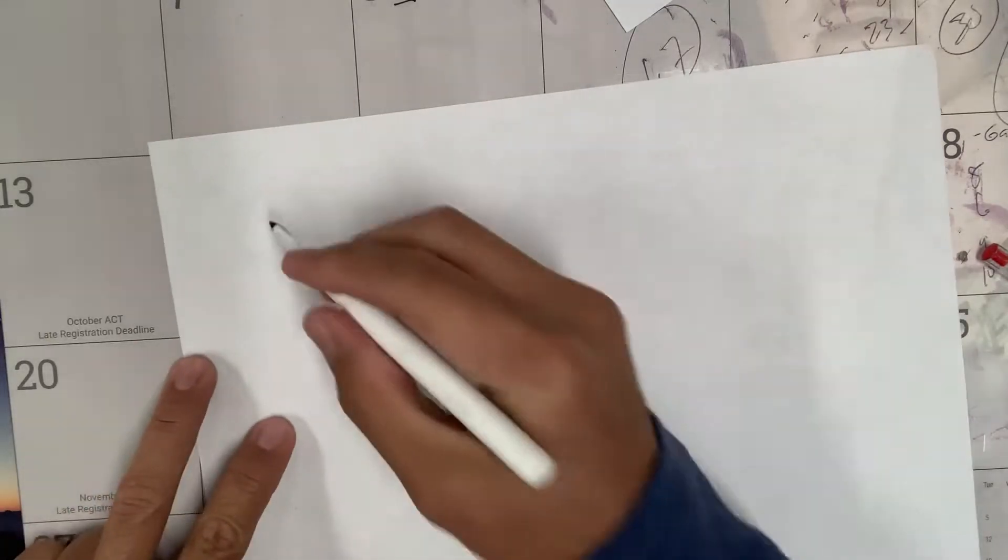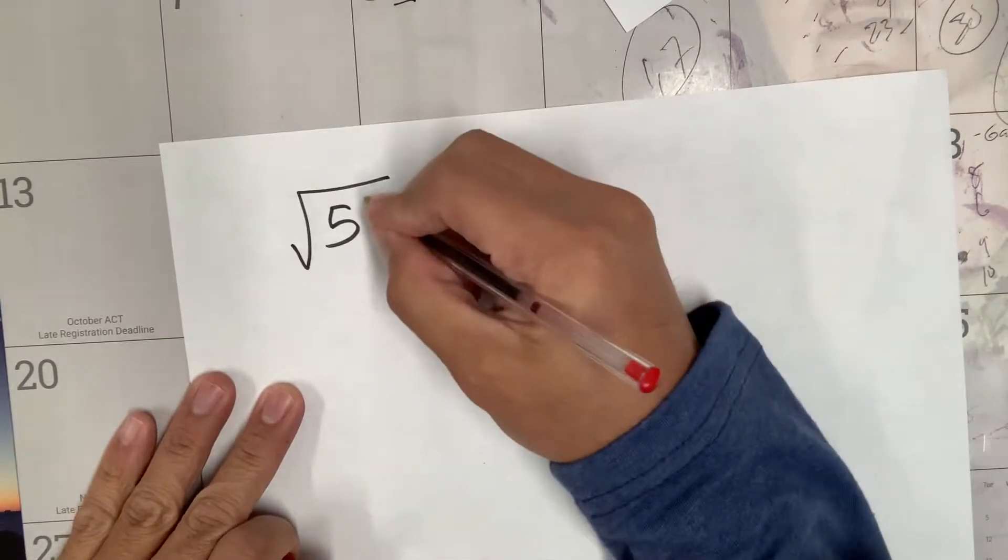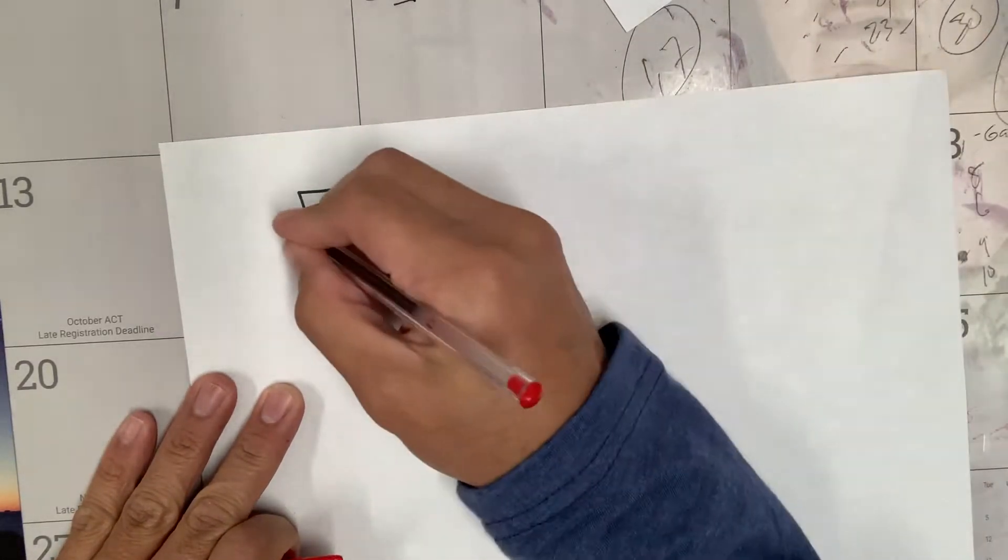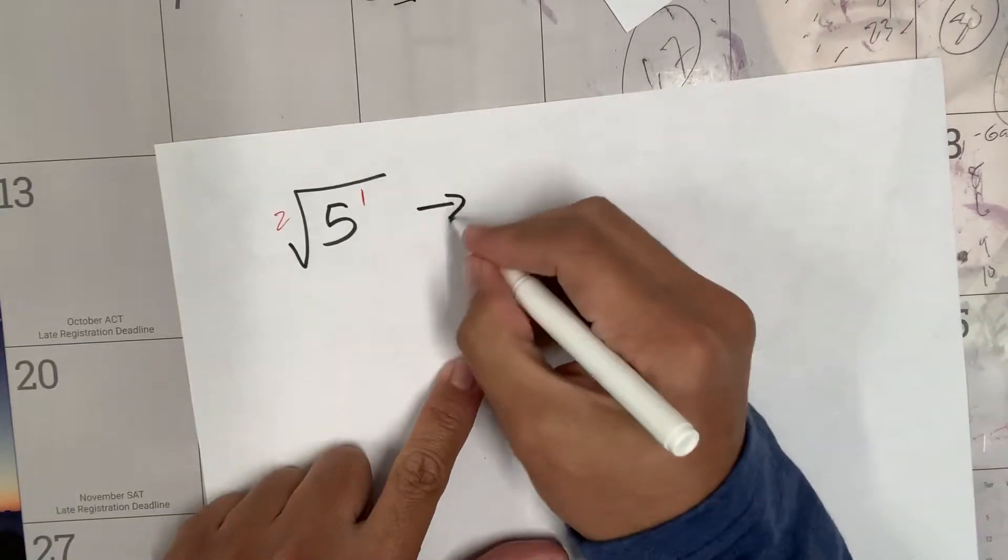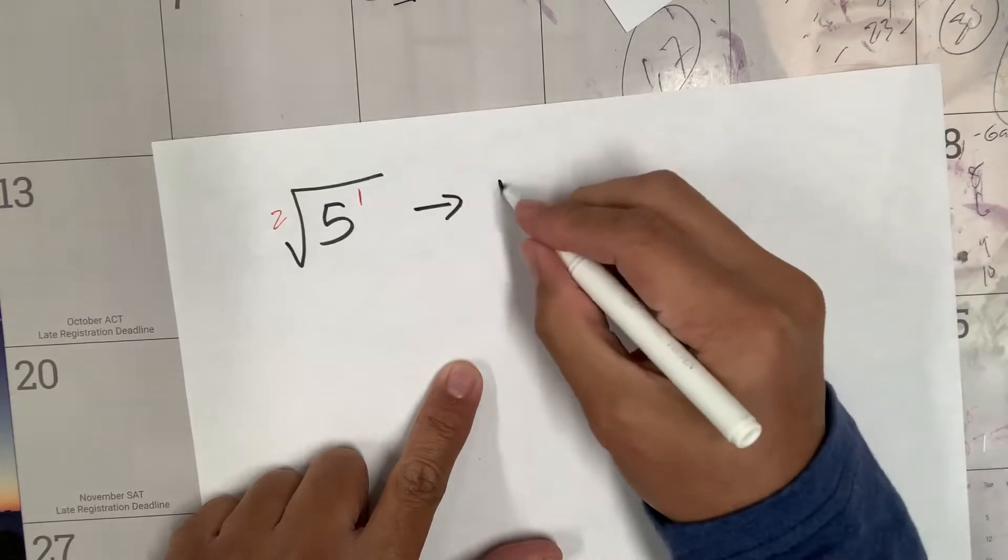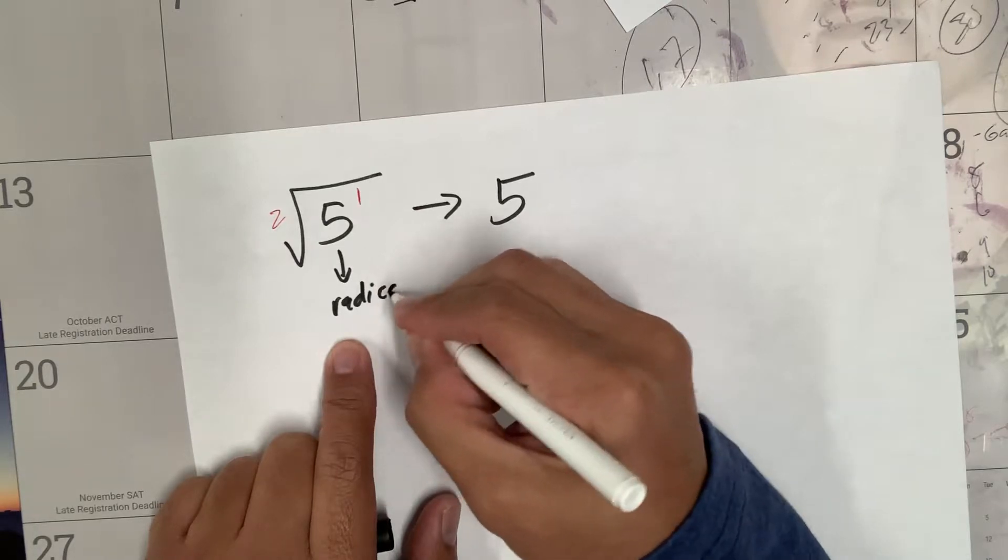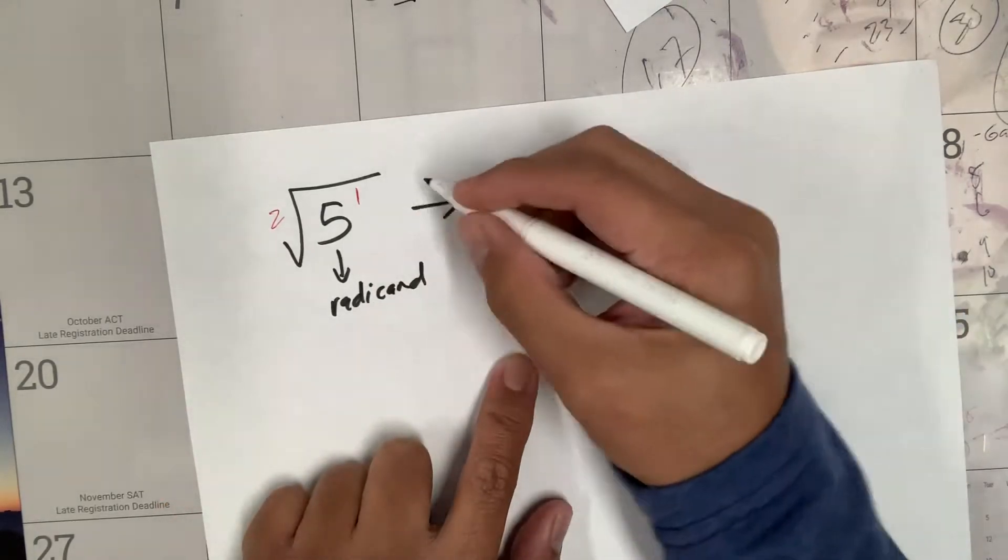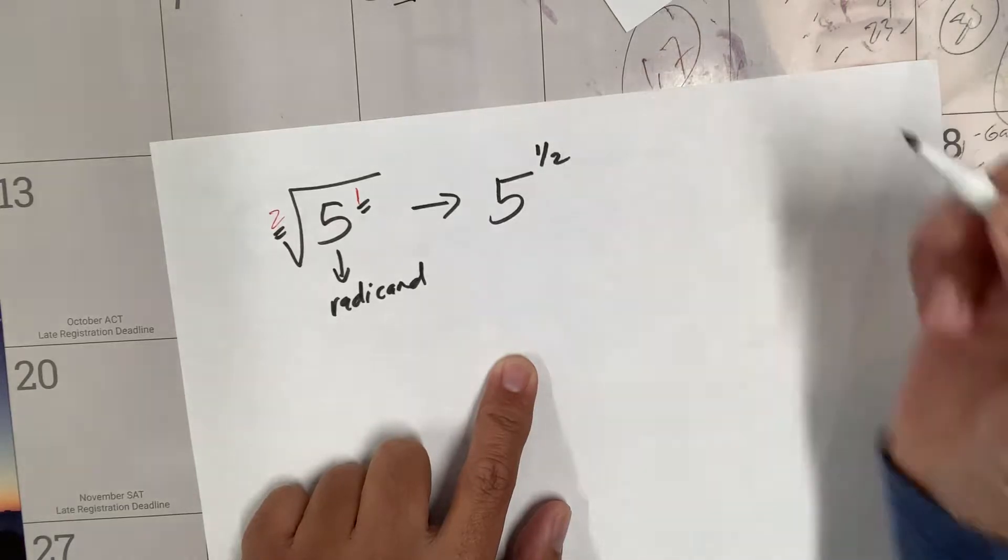First, if you have square root of 5, we know that there's an invisible one right here and two over there. This is a sample of a radical form that we have to write in exponential form. How do we do it? Five is the radicand.